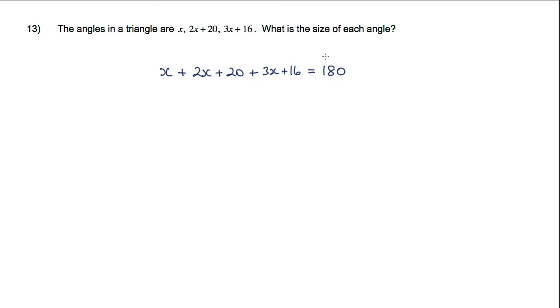Now I have an equation here which I can now solve. So gathering the like terms I have 6x plus 36 is equal to 180, and solving this equation we have 6x is equal to 180 minus 36. So 6x is equal to 144. We have x is equal to 144 divided by 6, and therefore x is equal to 24.